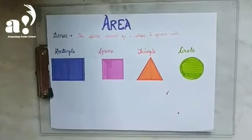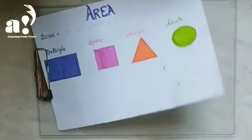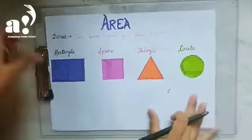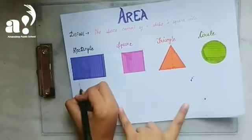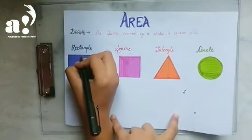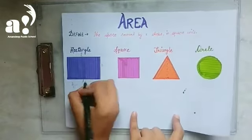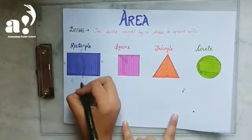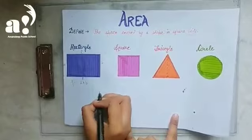Let's begin with the rectangle. In the previous video we picked up the perimeter; in this video we are going to find the area. We know that this side is length, this is breadth, this is length, and this is breadth. So the area of the rectangle is length multiplied by breadth.